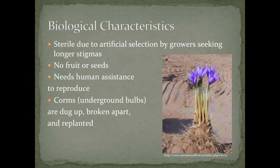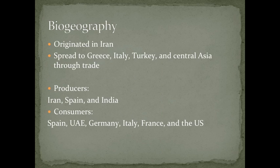After a few years, the corms are dug up, broken apart, and then replanted. Saffron's wild ancestors originated in Iran and spread to Greece, Italy, Turkey, and Central Asia through trade. It was the Greeks who first began cultivating crocus sativus. Today, the major producers of saffron are Iran, Spain, and India.